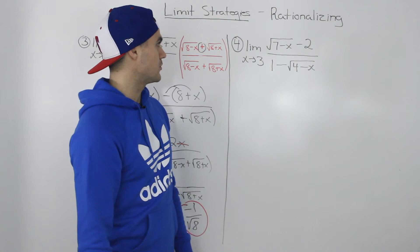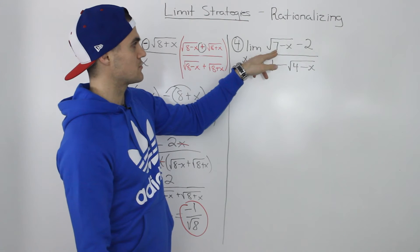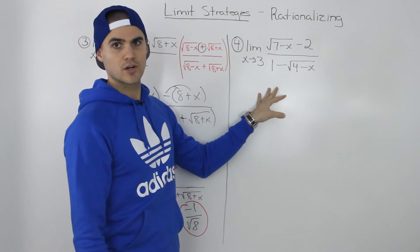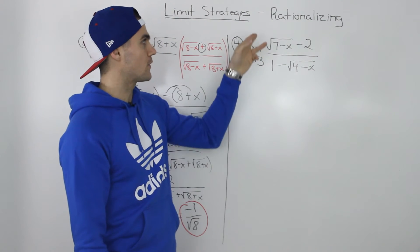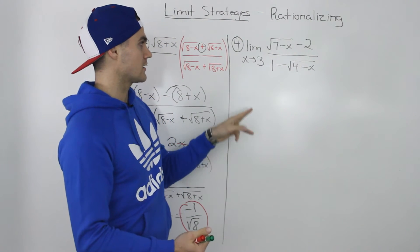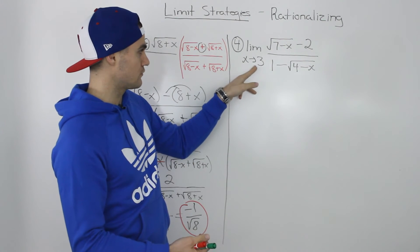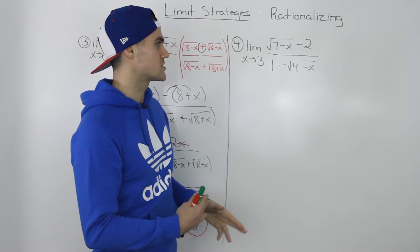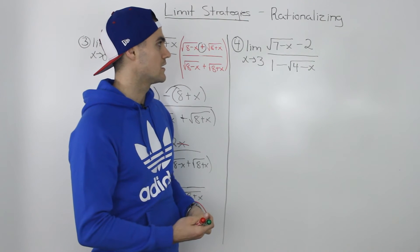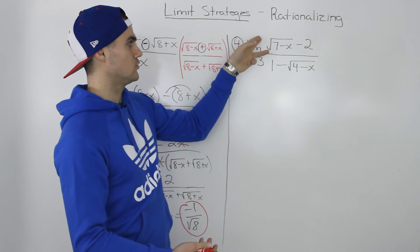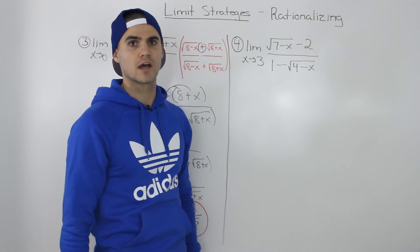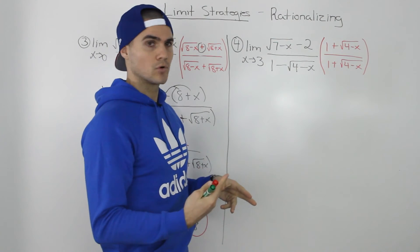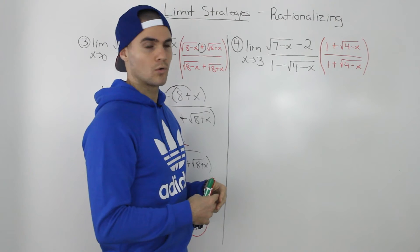Moving on to our fourth and final example: the limit as x goes to 3 of the square root of 7 minus x minus 2, all over 1 minus the square root of 4 minus x. This is about as tough a rationalizing limit question as you'll get. First, check direct substitution: subbing in 3 gives 4 minus 3 equals 1, square root of 1 is 1, and 1 minus 1 is 0 — so the denominator is 0 and direct substitution fails. We have radicals in both numerator and denominator, so we need to decide which to rationalize first.